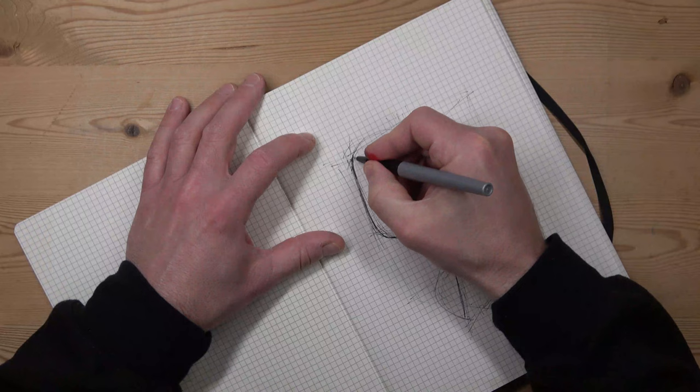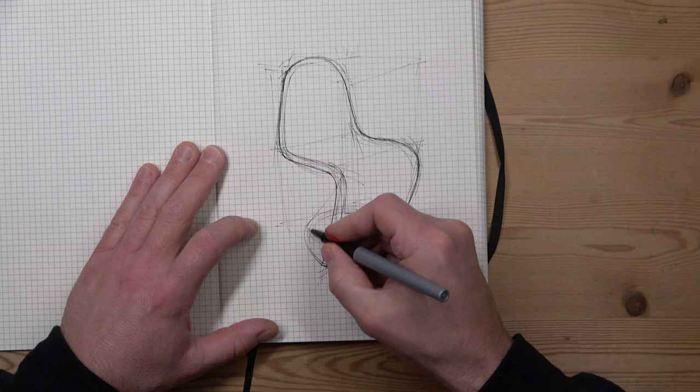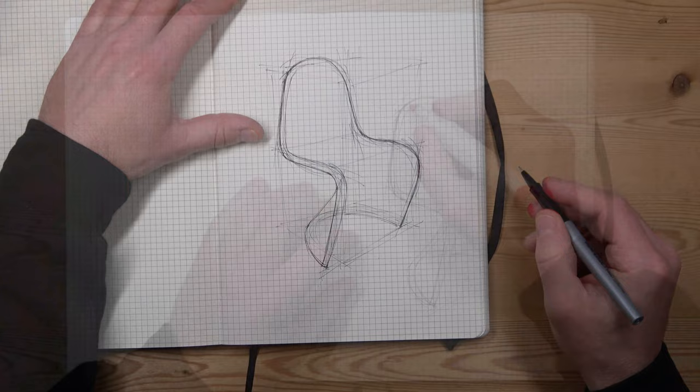For each of the lines I choose to darken, there are probably six or eight construction lines left untouched. I'm just choosing the ones which I think are in the right sort of place.